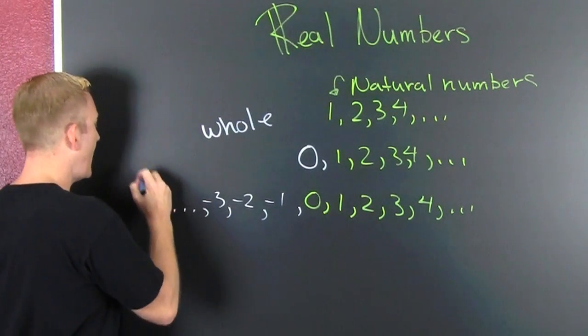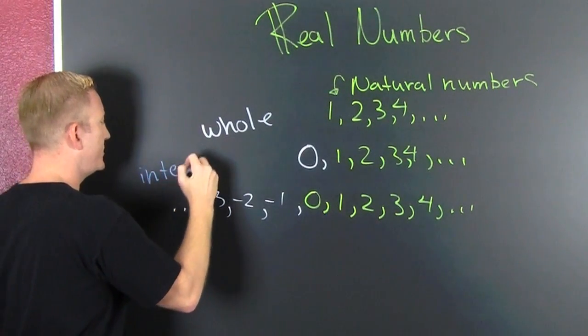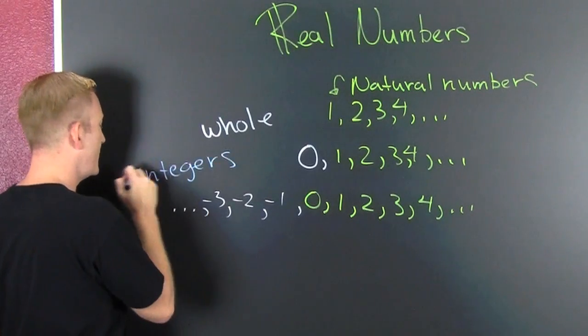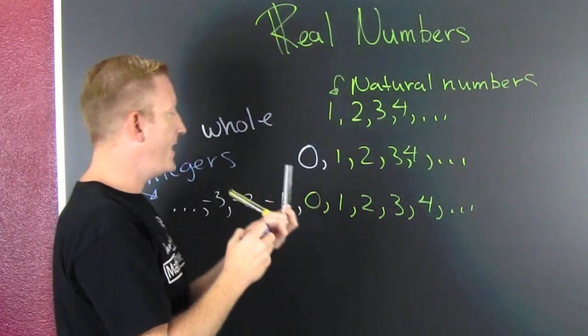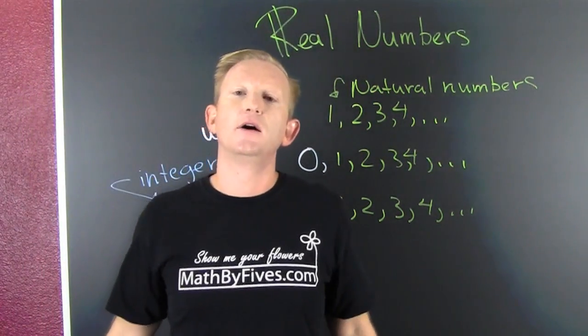The integers. I-N-T-E-G-E-R-S. The integers are the positive and negative counting numbers along with zero.